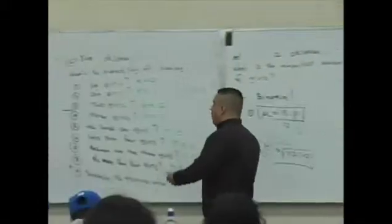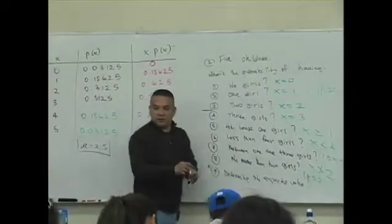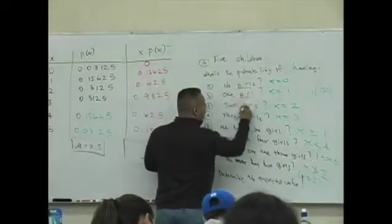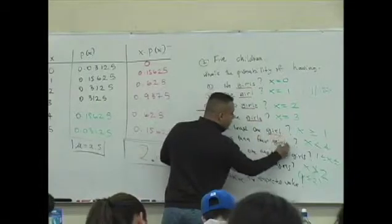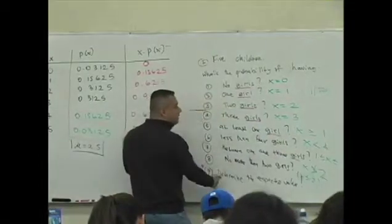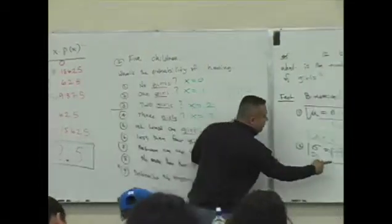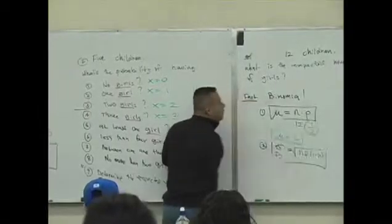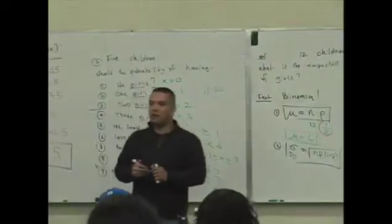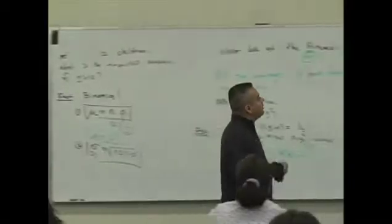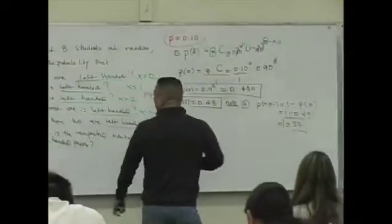So that's why I'm making such a big deal of this. Look at this one here. What was the success over here? The success is being a girl. The probability of a success here for this example was, what's p here? One half. In fact, let's see, number three. What does three say? Two are left-handed.